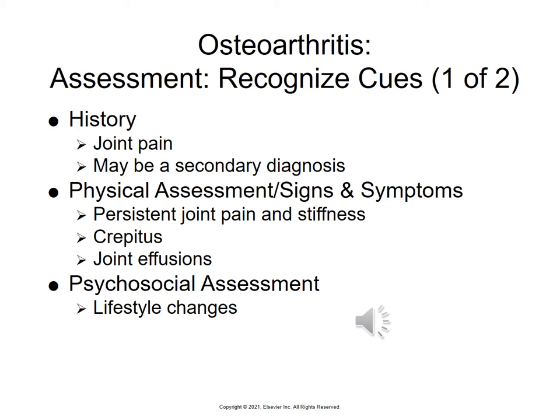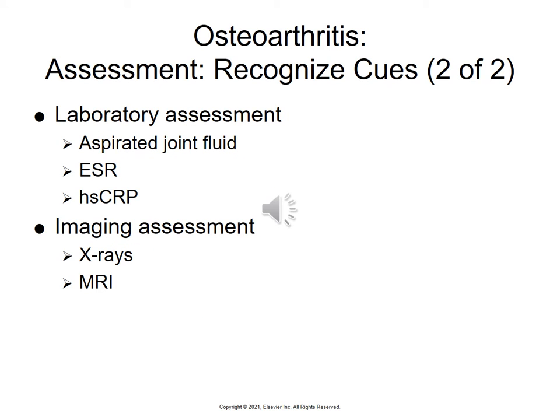Table 46.1 differentiates between rheumatoid arthritis and osteoarthritis. For laboratory assessment, they can aspirate joint fluid and may find urate crystals indicating gout. The sedimentation rate will increase with infection. The CRP and sedimentation rate together reflect secondary synovitis — in other words, joint inflammation. An imaging assessment including x-rays and MRIs will show vertebral and knee involvement.